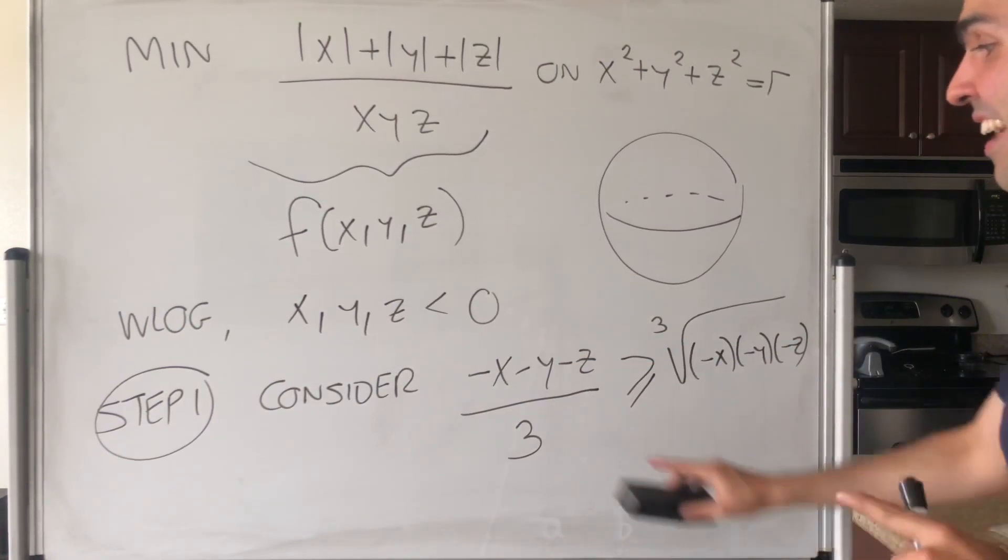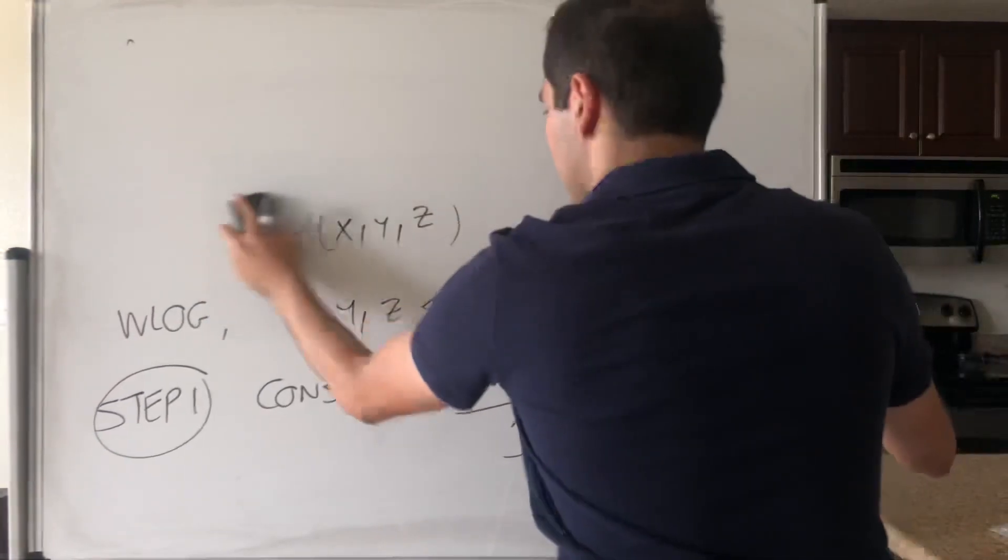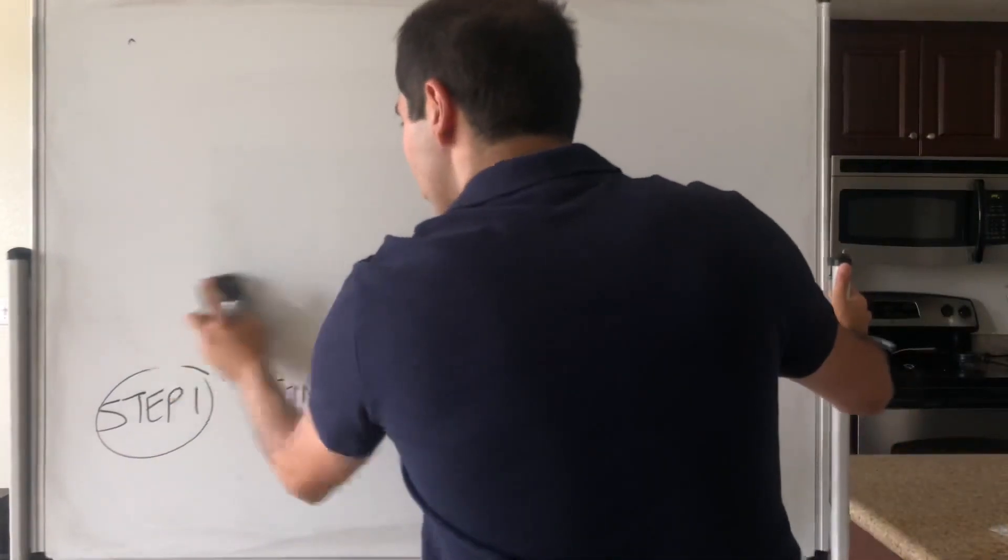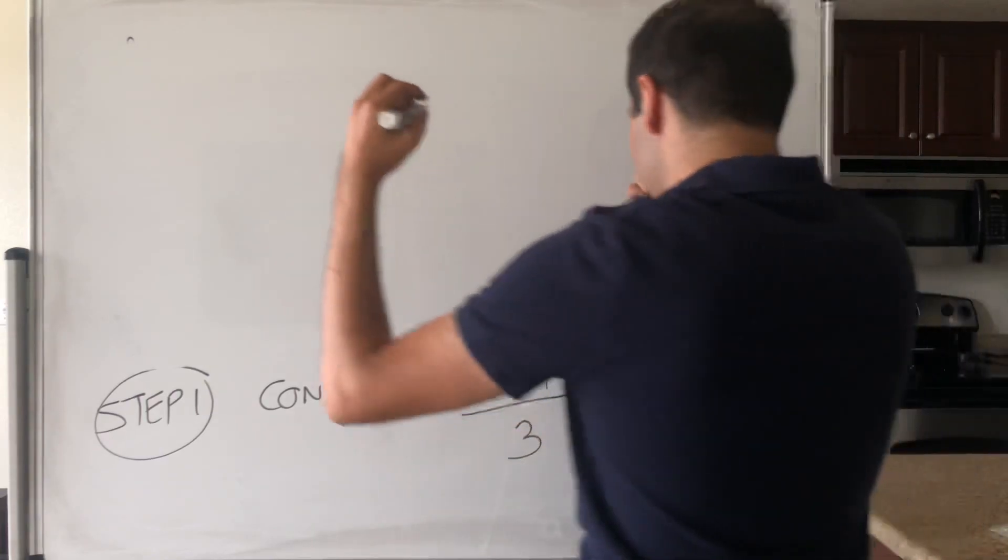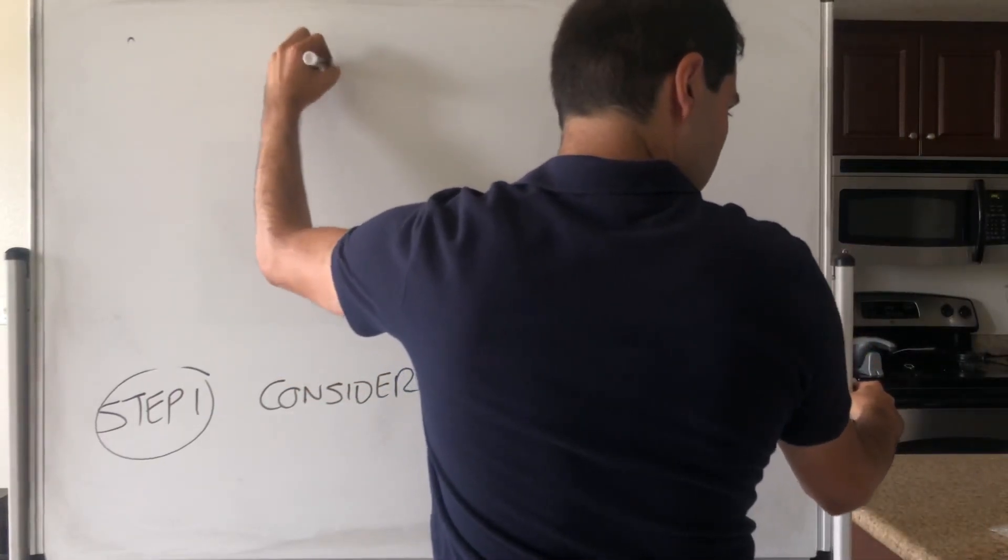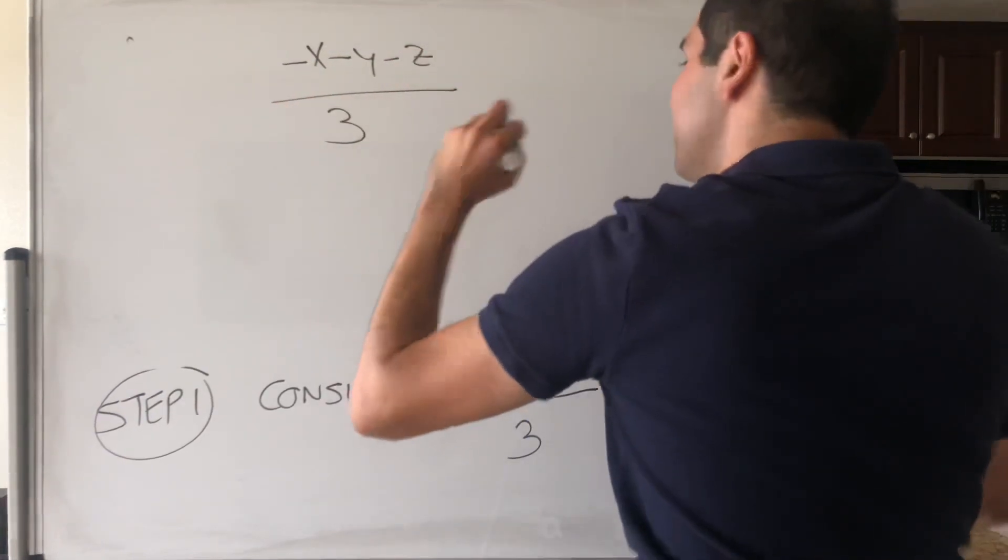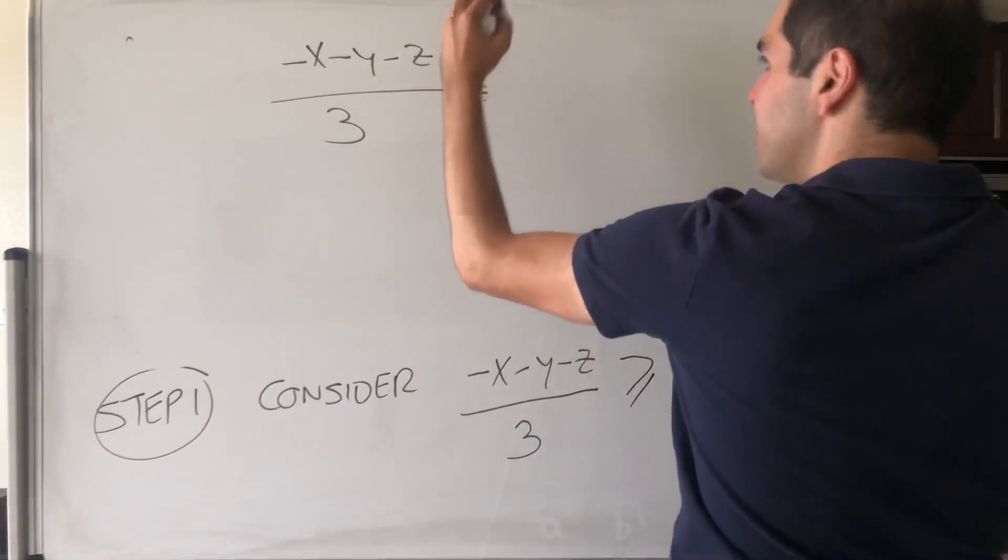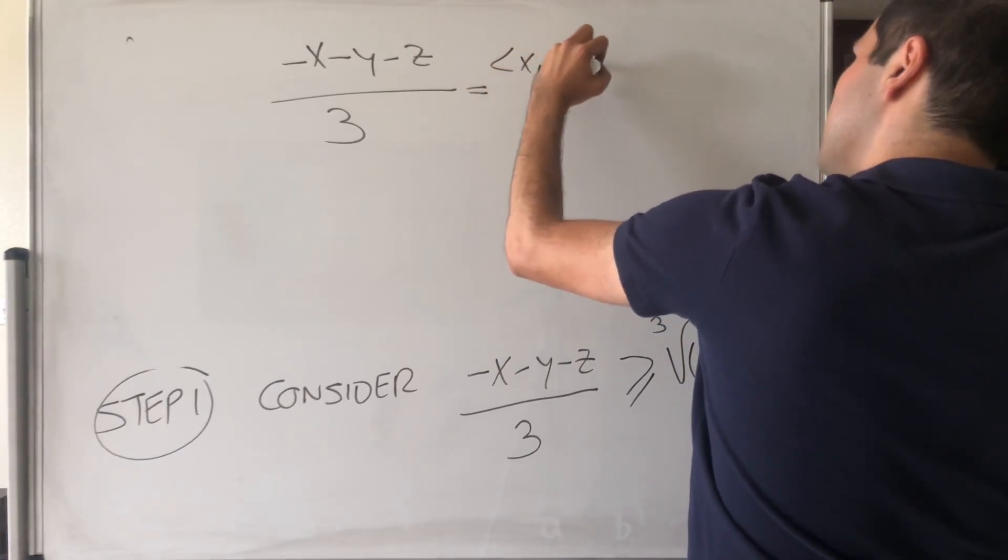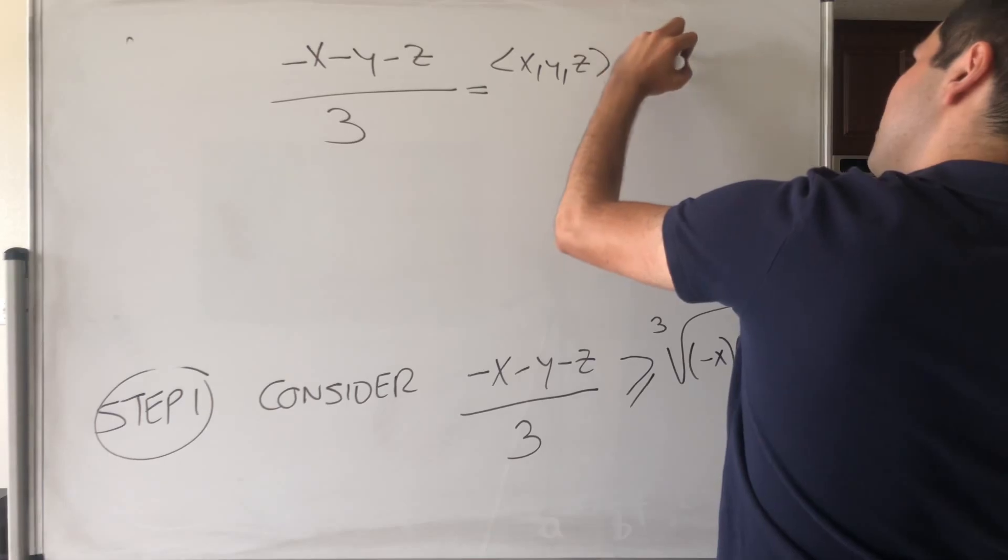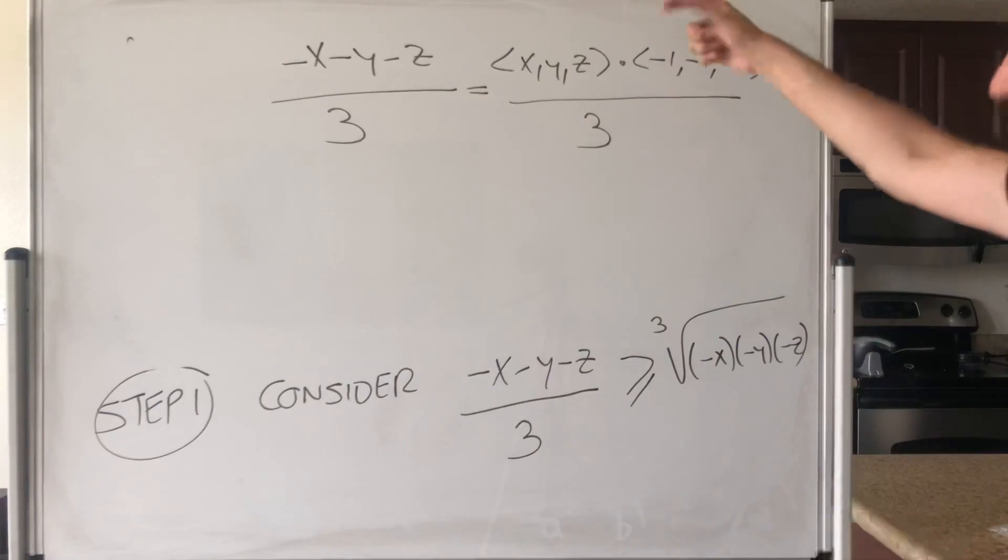On the other hand, let's consider this term again. So essentially, it's almost like a squeeze theorem kind of argument, because minus x minus y minus z over 3, that is the same thing as the dot product of x, y, z dotted with minus 1 minus 1 minus 1 over 3.